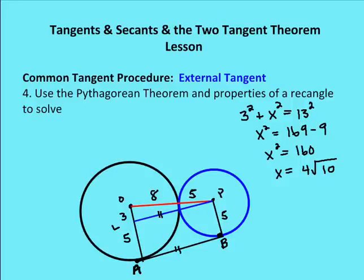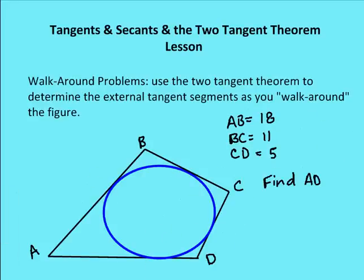Now let's talk about walk-around problems, which is part two of this lesson. Walk-around problems involve a quadrilateral or polygon circumscribed around a circle. We are given some of the lengths of entire segments and asked to find another segment. The first step is to define a portion of one of the lengths as x.